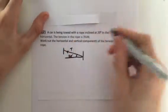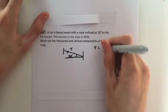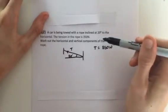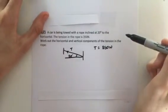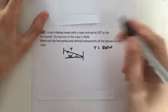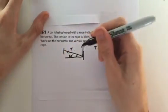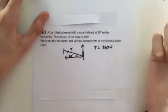And this is your tension here. So it says T is 350 newtons. So it says work out the horizontal and vertical components of the tension of the rope. So we just did this earlier.